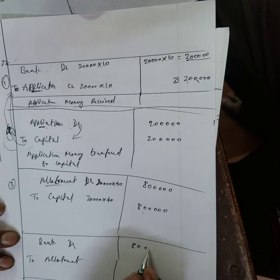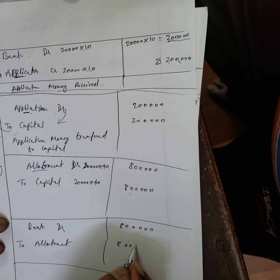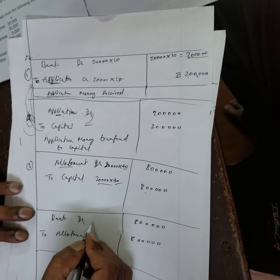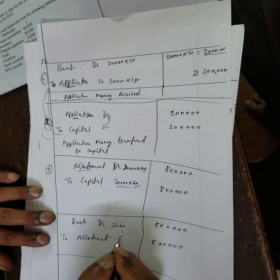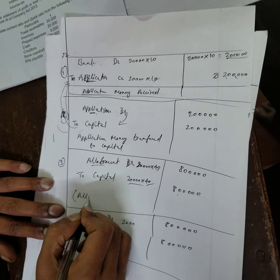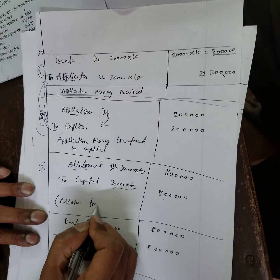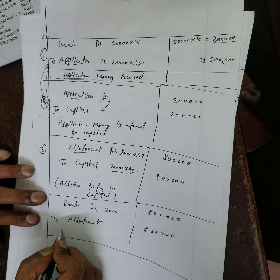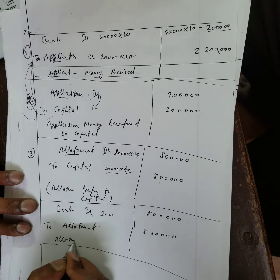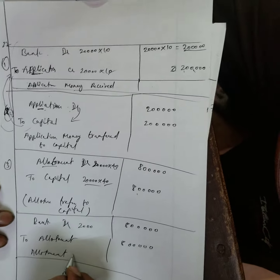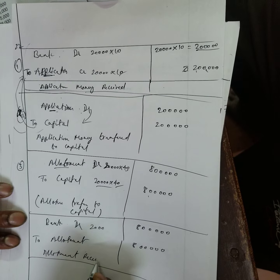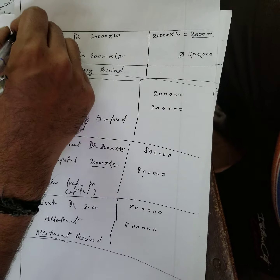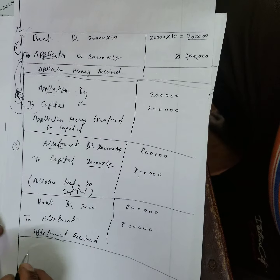The 40 rupees allotment charge: first we charged 10 rupees for application, now 40 rupees for allotment. The format shows: allotment money transferred to capital, and allotment money received — same two-entry pattern as before.